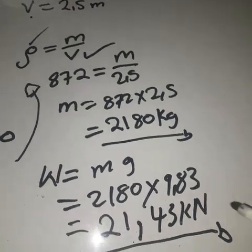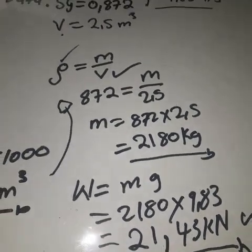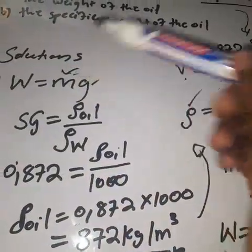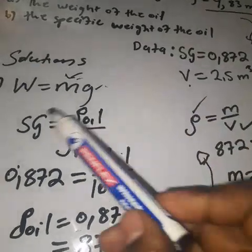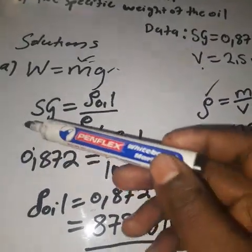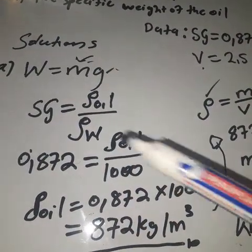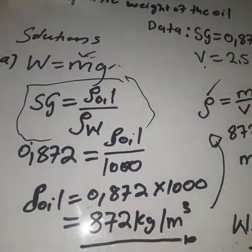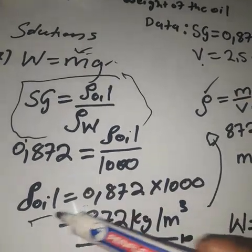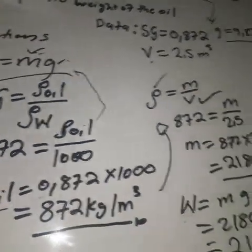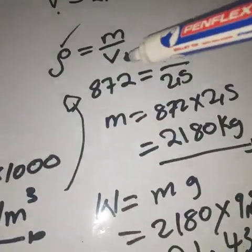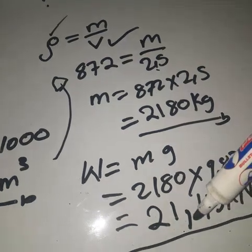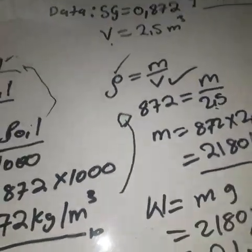To recap: we didn't have mass, but we used specific gravity to calculate density. That density equation gave us the density of oil, and then substituting into density equals mass over volume with the given volume, we found the mass. Then we applied W = mg to get the weight.